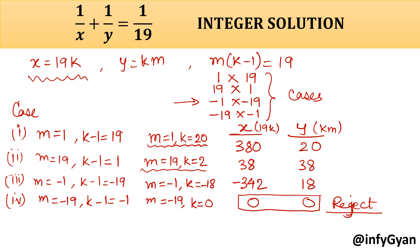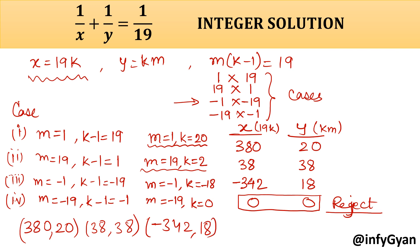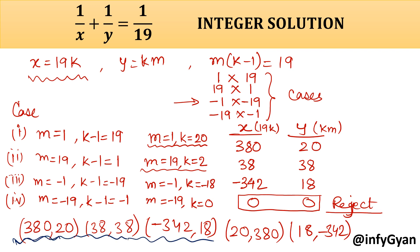So the solutions are: x equals 380, y equals 20; x equals 38, y equals 38; and x equals negative 342, y equals 18. Because x and y have symmetry in the equation xy equals 19 times x plus y, you can swap x and y values. So swapping gives additional solutions: x equals 20, y equals 380; x equals 38, y equals 38 (same); and x equals 18, y equals negative 342. These are all the final integer solution pairs.